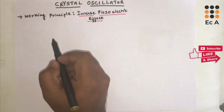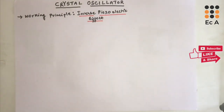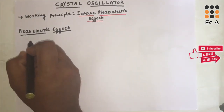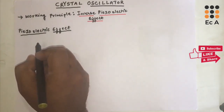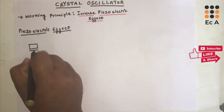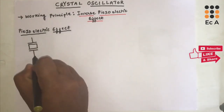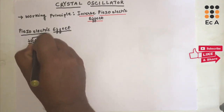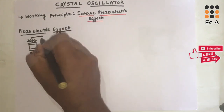Before going to the operation of crystal oscillator, we need to understand what is piezoelectric effect and what is inverse piezoelectric effect. Many naturally available crystals exhibit piezoelectric effect. Piezoelectric effect is an electromechanical phenomenon. If we take any piezoelectric material and apply certain amount of pressure on it, it will produce voltage across its terminals.